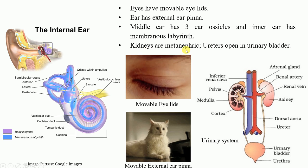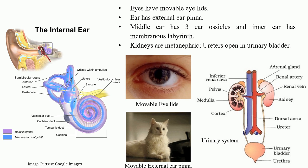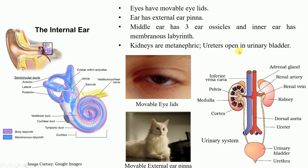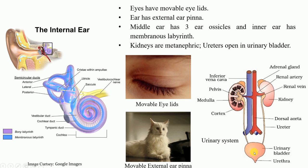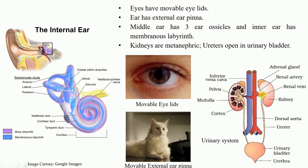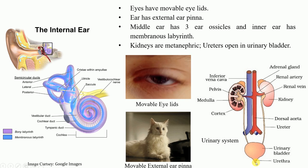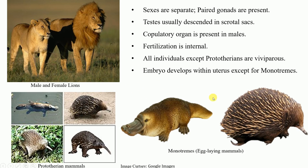The excretory system consists of well-developed metanephric kidneys — the most developed kidneys found among mammals. The ureter opens into the urinary bladder, where urine is temporarily stored. Urine is formed in the kidneys, travels via the ureter into the urinary bladder, and is passed out through the urethra.